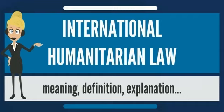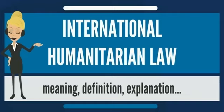International humanitarian law, ius in bello, regulates the conduct of forces when engaged in war or armed conflict. It is distinct from ius ad bellum, which regulates the conduct of engaging in war or armed conflict and includes crimes against peace and of war of aggression. Together, ius in bello and ius ad bellum comprise the two strands of the laws of war governing all aspects of international armed conflicts.